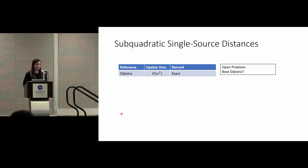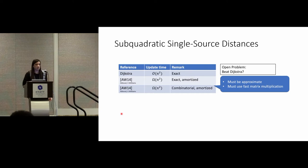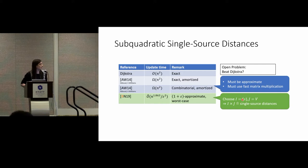Let's start with single source distances. A trivial solution would be just to run Dijkstra's algorithm whenever someone asks for the distance — on dense graphs, it might need something like N-square time. The question is: can we beat trivially running Dijkstra every time? There are lower bounds that say no, it's probably not possible unless you use fast matrix multiplication and approximation. But that's exactly what our data structure does — we get single source distances and maintain them in better than N-square time. That's one of the major open problems in graph data structures solved.